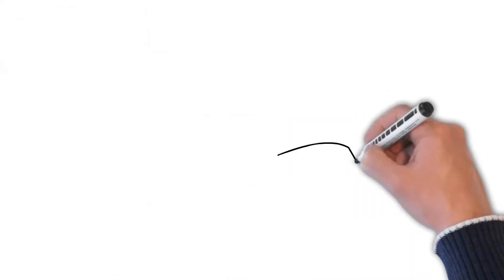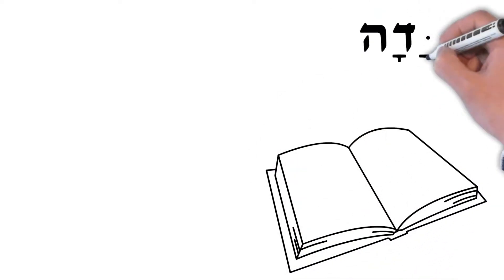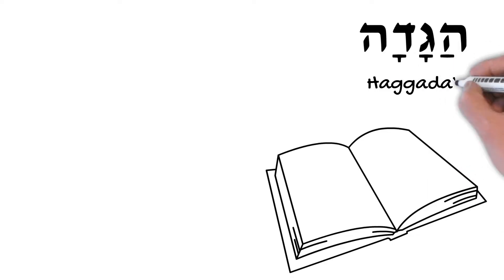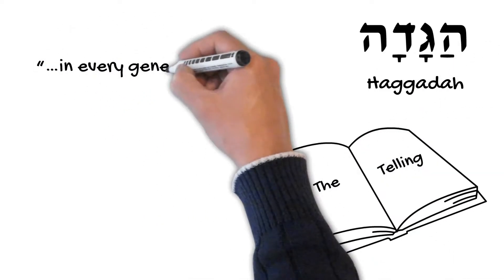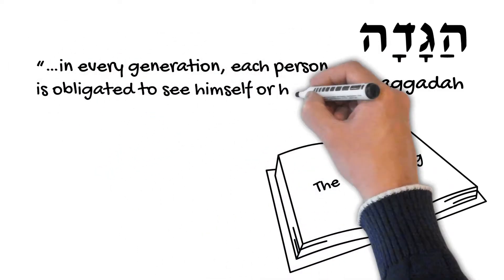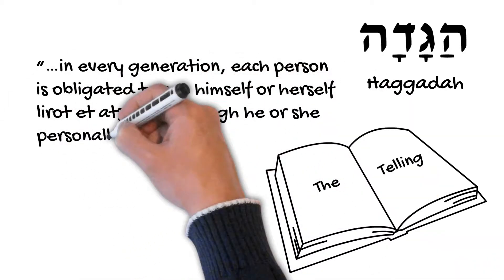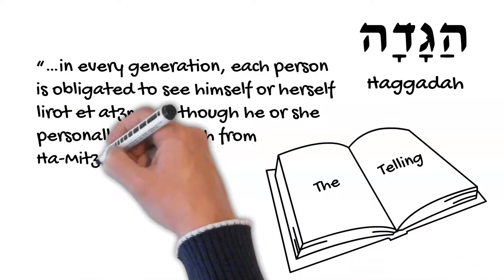The traditional Passover Haggadah, meaning the telling, reminds us that in every generation, each person is obligated to see himself or herself, le rot et atzmo, as though he or she personally came forth from Ha-Mitzrayim, Egypt.